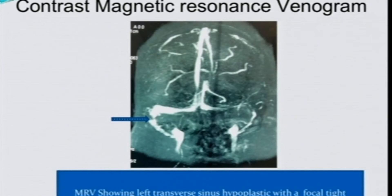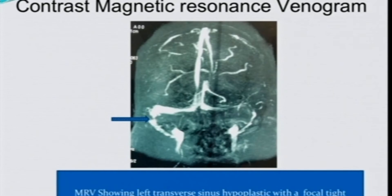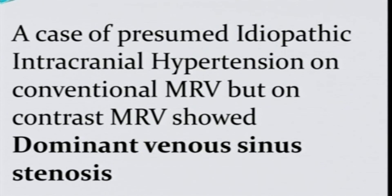With that in mind, we requested contrast MRV. The contrast MRV showed tight narrowing at the junction of the dominant transverse-sigmoid sinus, with hypoplasia of the left transverse sinus. The left transverse sinus takes very little part in venous drainage; it is the right transverse sinus that drains most of the venous blood from the brain. Most CSF is absorbed by arachnoid granulations in the venous sinuses, so any blockage results in increased intracranial pressure with severe papilledema.